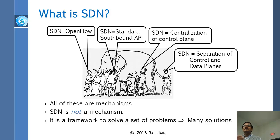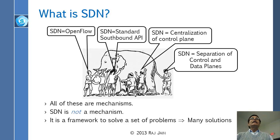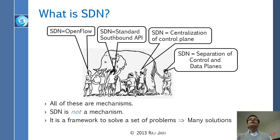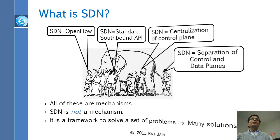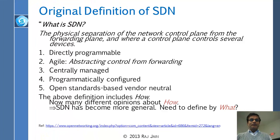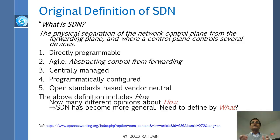First, people didn't know where OpenFlow was going to get them, or whether they could get there by some other method. And so that is what has changed the definition. People are saying now that SDN is not a mechanism — these are all mechanisms. SDN is a goal, and how to reach that goal.